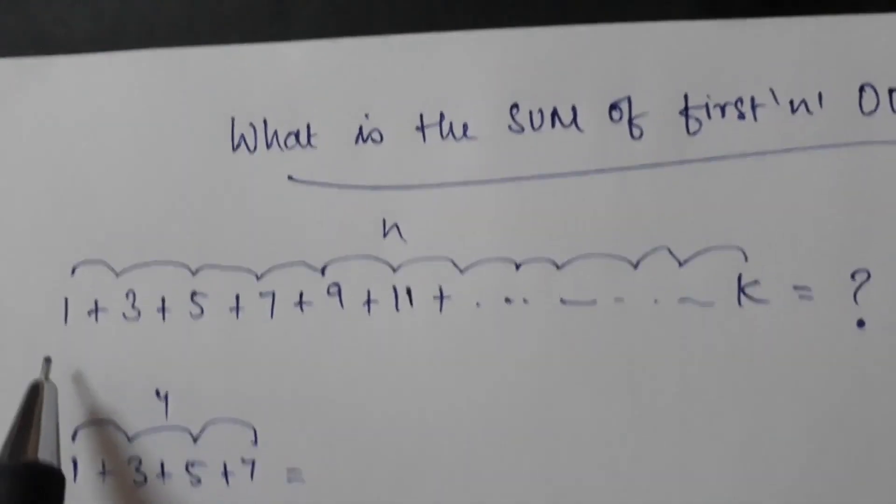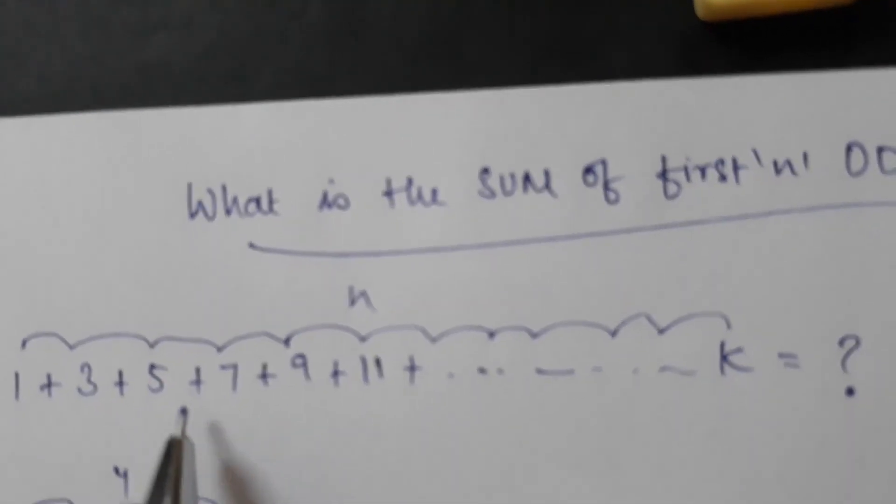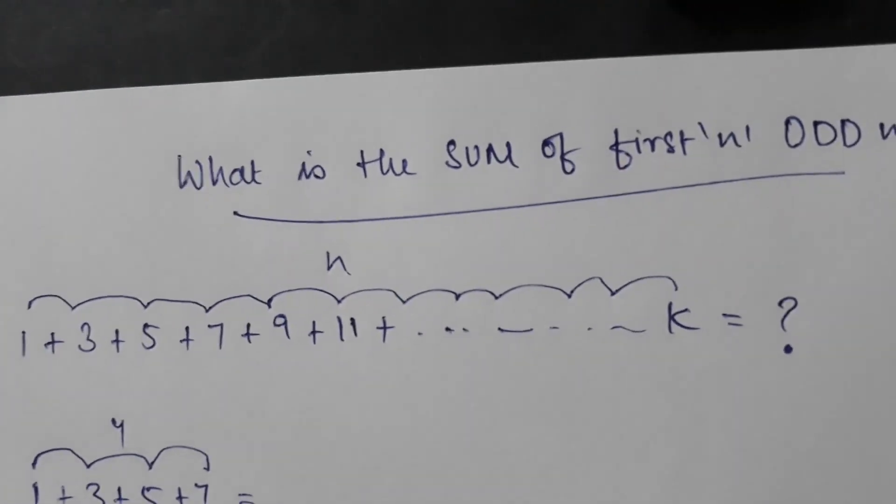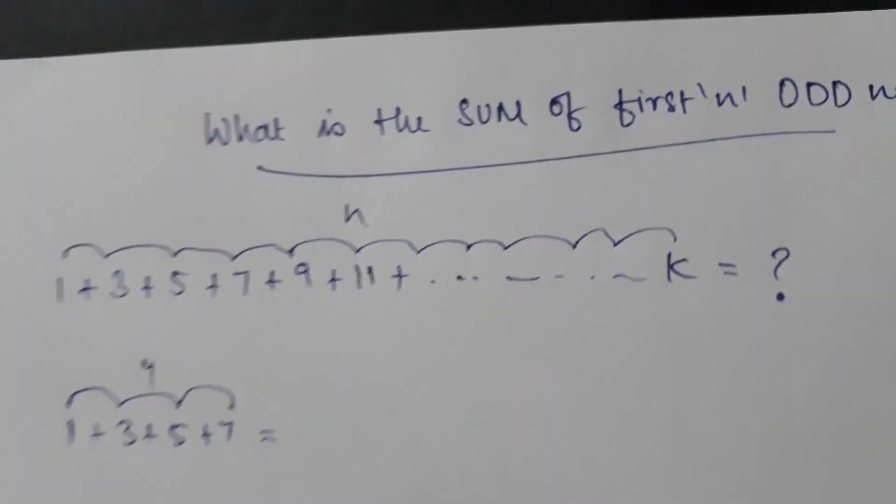What it actually means is that 1 plus 3 plus 5 and so on till k, where k is the nth odd number.